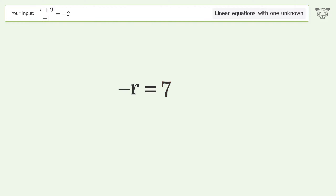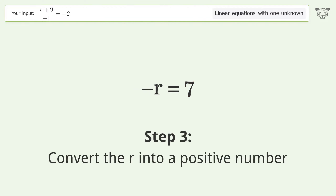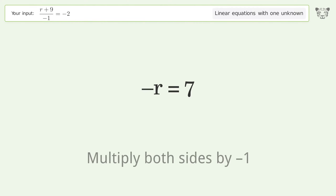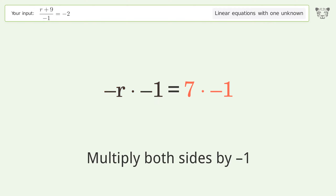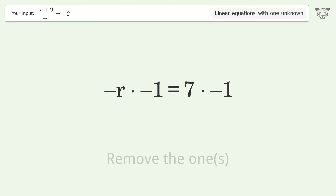Simplify the arithmetic. Convert r into a positive number by multiplying both sides by negative 1.